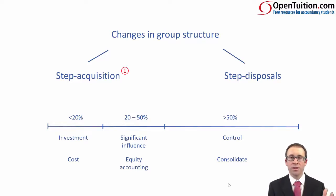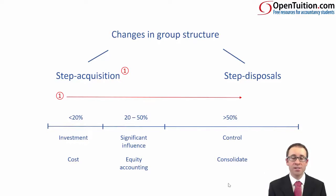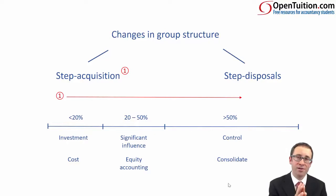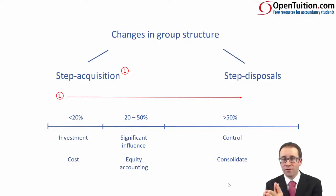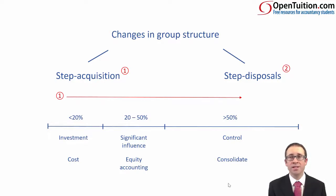What we're going to look at first is a step acquisition, whereby we acquire shares in stages — going up the stairs, if you like. Imagine you've got 100 stairs, each representing one percentage ownership step. On the first 20 steps we have an investment. If we buy more shares and get to the 20th to 50th step, we have significant influence — associates — and we equity account. If we get anywhere greater than the 50th step, we have control and we consolidate. That's going up the stairs, and as we come down the stairs, that's the step disposals.